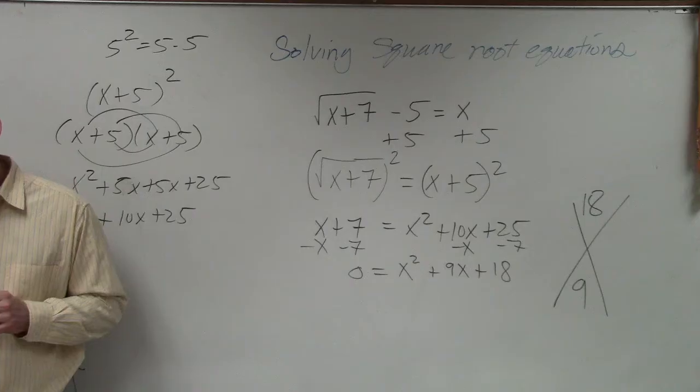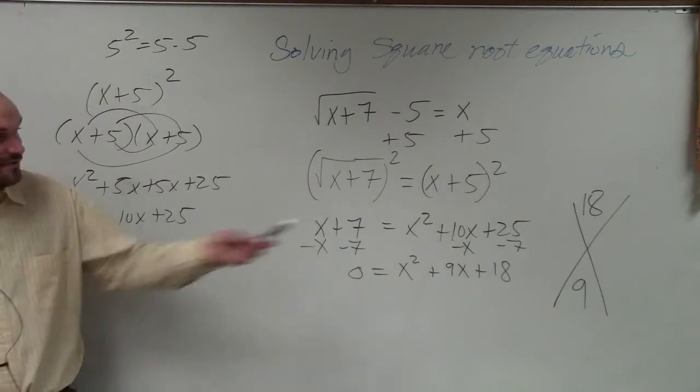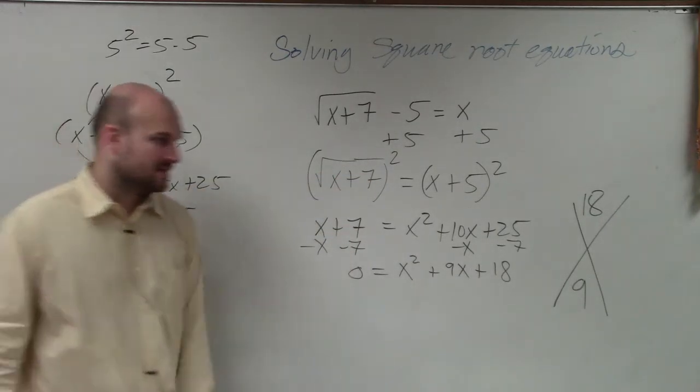2 and 9. No. What are the two numbers? You're right. 2 and 9 do give you multiply to 18, but they don't add to give you 9. 3 and 6.